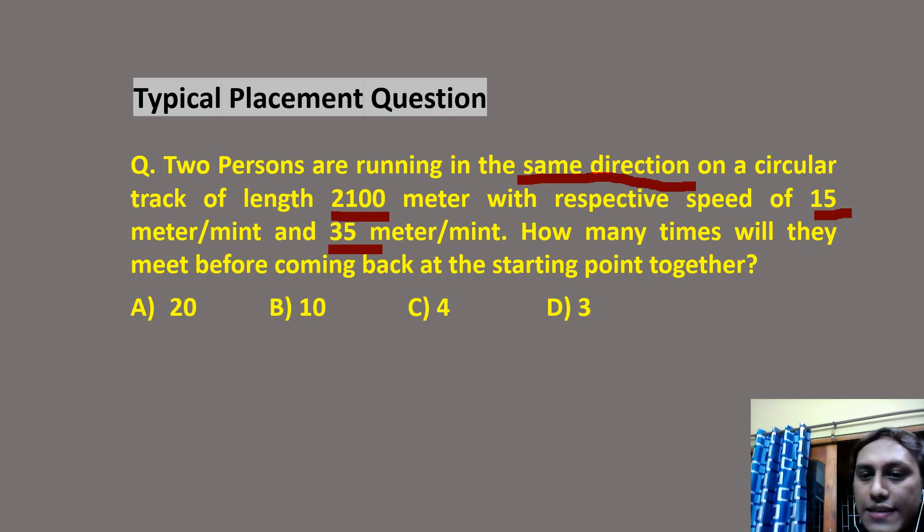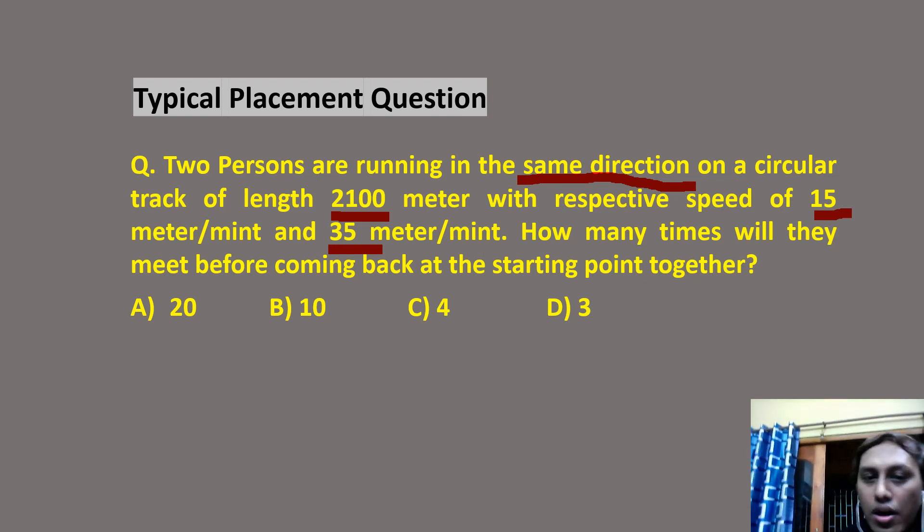So the question is basically saying if you move on a circular track and they continue moving, before coming to the starting point together, how many times they will meet on the track? At how many points before coming to the starting point? Options are A) 20, B) 10, C) 4 and D) 3.